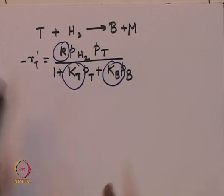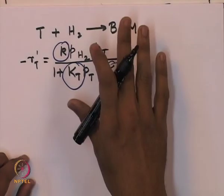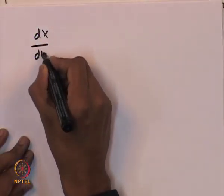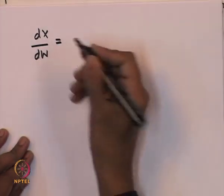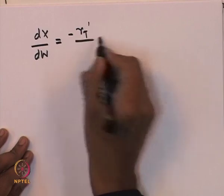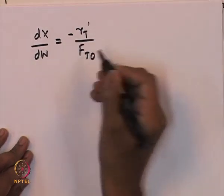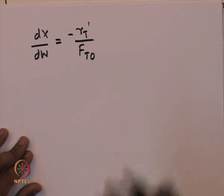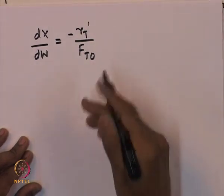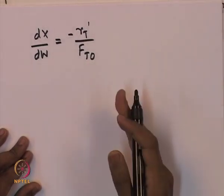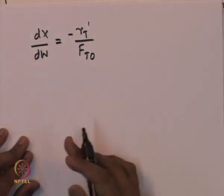We then initiated discussion on the design of a reactor using this rate law. While designing the reactor, we wrote a mole balance and found the equation that captures the conversion in the reactor as a function of the weight of the catalyst: dx/dw = -r'_T / F_T0, where -r'_T is the rate at which toluene is consumed, and F_T0 is the initial feed molar flow rate of toluene.